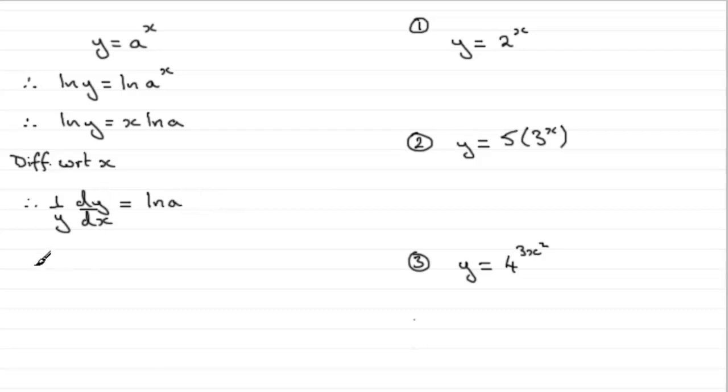So dy by dx is going to equal y times the natural log of a if we multiply both sides by the y. But what is y? Well, it's a to the x. So therefore we have the differential with respect to x is equal to a to the power x natural log of a. And this is a result then that you ought to try and remember.